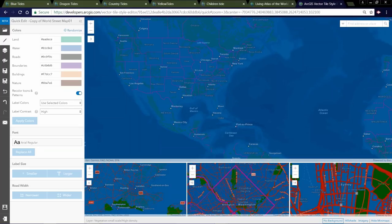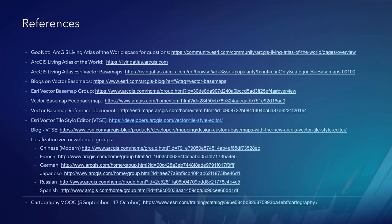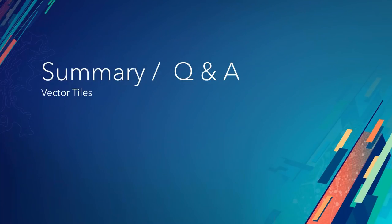Thanks, Wes. On this screen now is the list of references with URLs for a lot of the topics we covered throughout the slides. The first one is the GeoNet page — if we don't get to your questions, you can continue the question and answer there. There are also links to the Living Atlas, the vector basemaps, the vector basemap group, the localization group, and the style editor that Wes displayed. There is a PDF handout attached to this webinar with these links as well. With that, I'll turn it over to Tamara for questions.